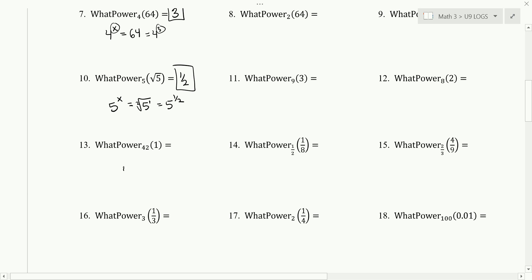Number 13 is asking the question 42 to what power is 1. Well, anything to the power of 0 is 1. So that's 42 to the power of 0. So the answer is 0.